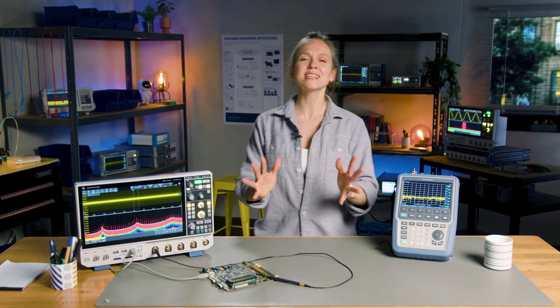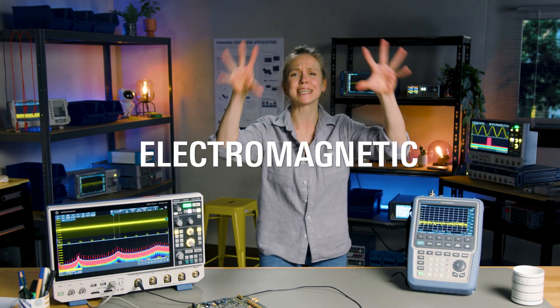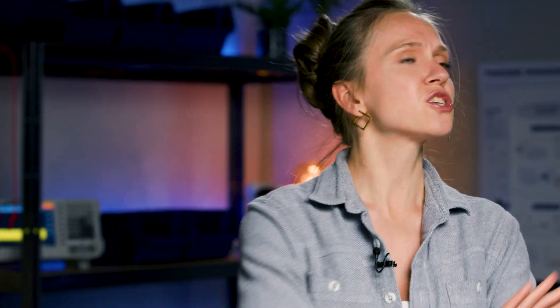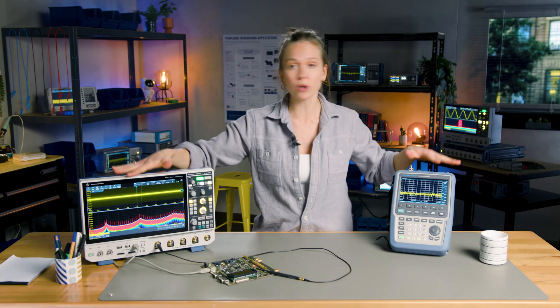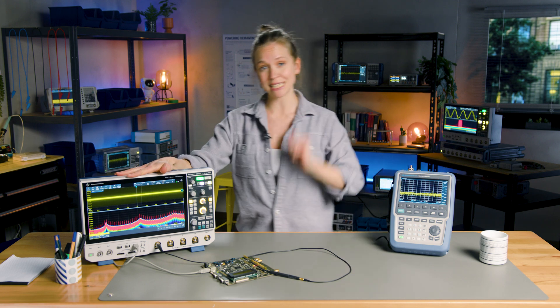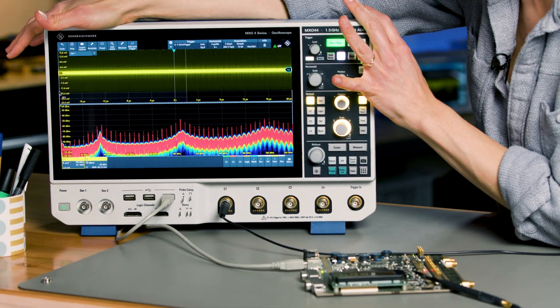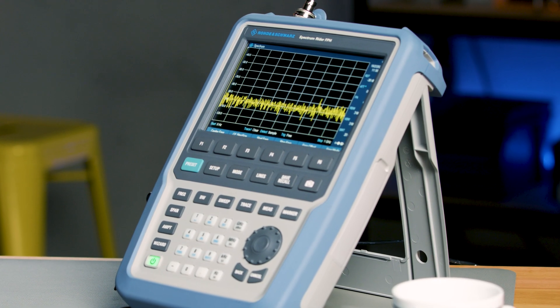Hello and welcome to Precision in Under 5 Minutes. My name is Masha and today we'll look at tips and tricks for debugging electromagnetic interference or EMI. Precision is critical when troubleshooting EMI and we have two instruments from Rohde & Schwarz that make it easier: the MXO4 oscilloscope and the FPH handheld spectrum analyzer.